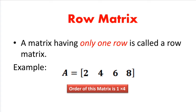The row matrix: a matrix having only one row is called a row matrix. It is very simple. If you have a row matrix, you write it as a single row. Here, the row matrix is a single row, and its order is 1 by n.